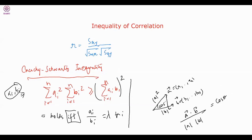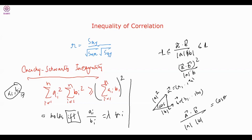Since cos θ of the angle between vectors satisfies −1 ≤ cos θ ≤ 1, we have (a·b)² / (|a|²|b|²) ≤ 1. This is actually the squared form of the Cauchy-Schwarz inequality. Now let's use this to prove the bound on r.